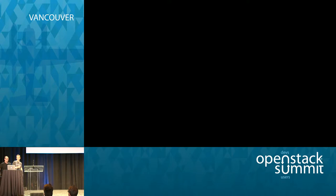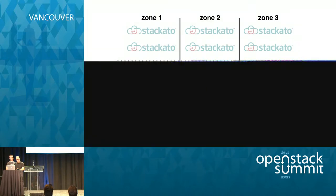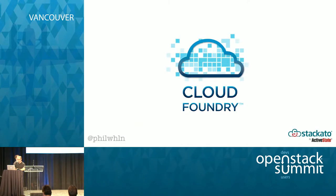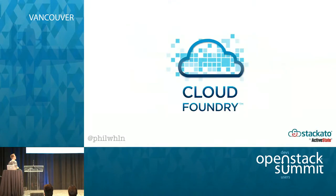We also support availability zones. On OpenStack and many other cloud platforms, you have the concept of availability zones — separate networks, separate data centers. Staccato can actually map to those availability zones, so if one availability zone goes down, it will distribute the instances to other availability zones.